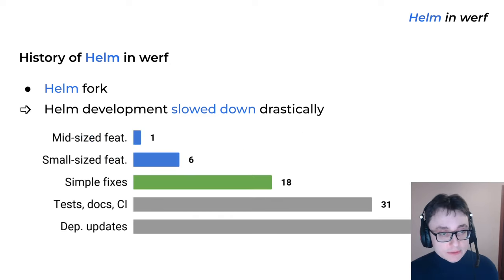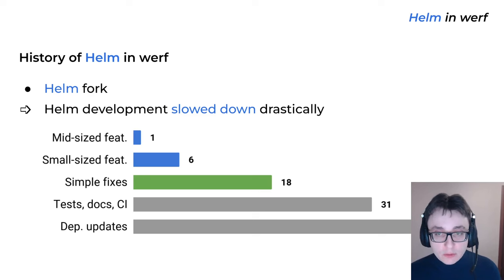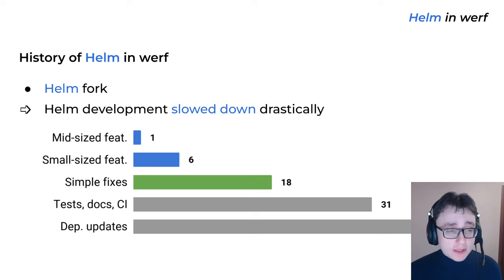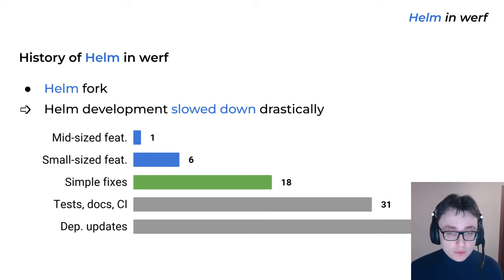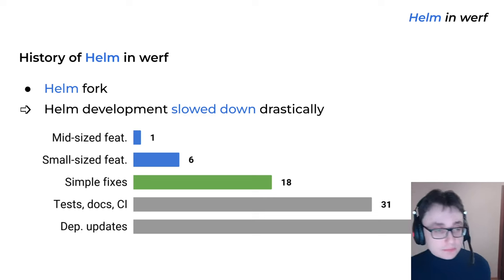To not be unfounded, here is a diagram with all the commits to Helm 3 in the past half a year. There is basically one feature that can be called a mid-sized feature — the new command 'helm get metadata', which is pretty trivial in implementation and not very useful overall. Other than that, there are six minor features like the --kube-version flag for the helm template command, and a few simple fixes for non-critical things. All the other commits are just updates to test suites, documentation, CI, or dependency updates.